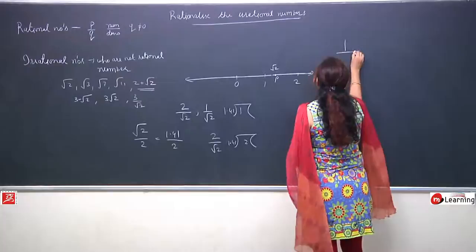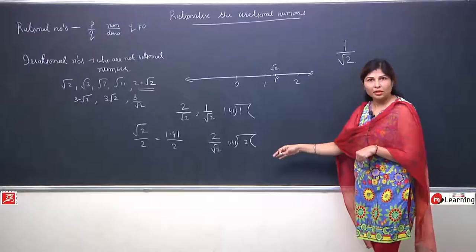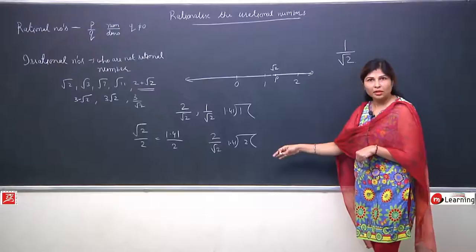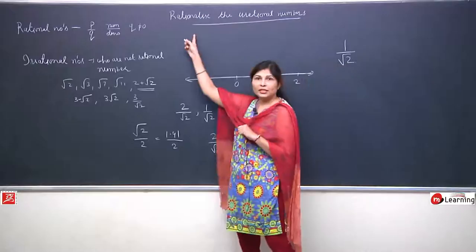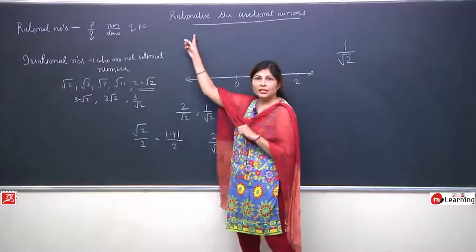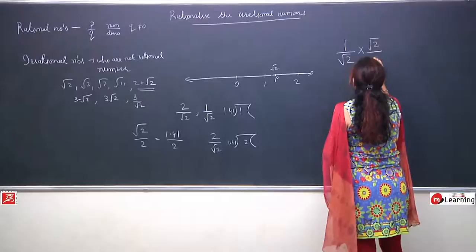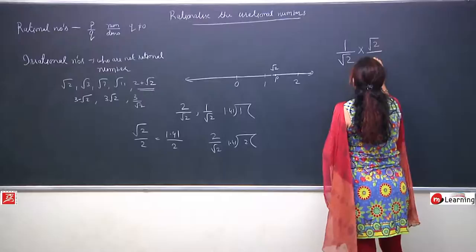Let us take a small example: I have 1 by root 2. Simply we could solve by division, but as I told you, it would be very tough. So we will try to remove it from the denominator. We will apply rationalization. The method of rationalization is: whatever number is in the denominator, we multiply by that same number and also divide by that same number.